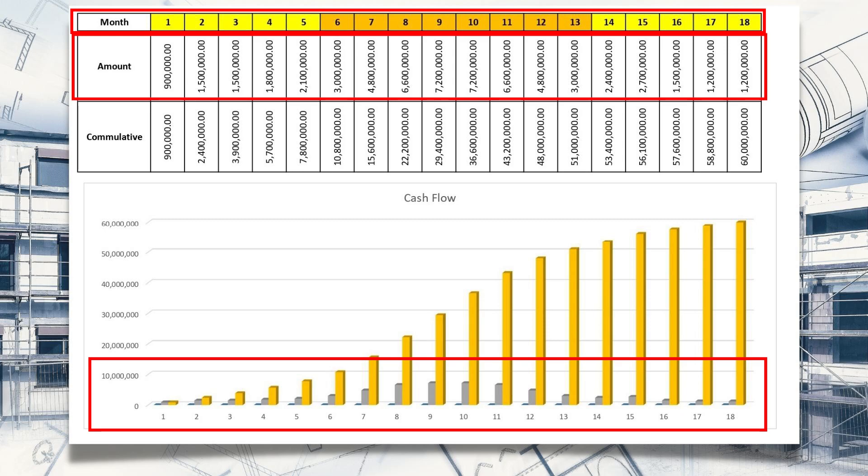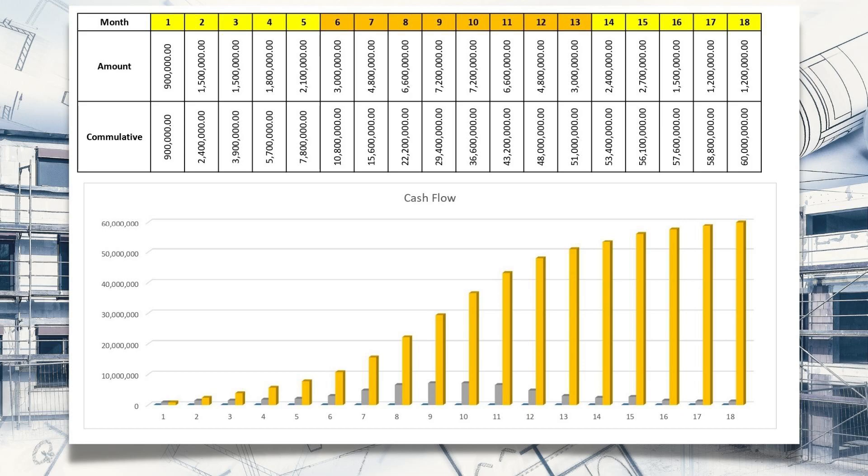The monthly amounts increase to a peak around months nine and ten where the most spending occurs, then decrease — so it looks like a bell shape. This is similar to the manpower histogram, which you get when you load resources on the program. The relationship between month and amount gives a bell shape, but the relationship between month and cumulative gives the S-curve.